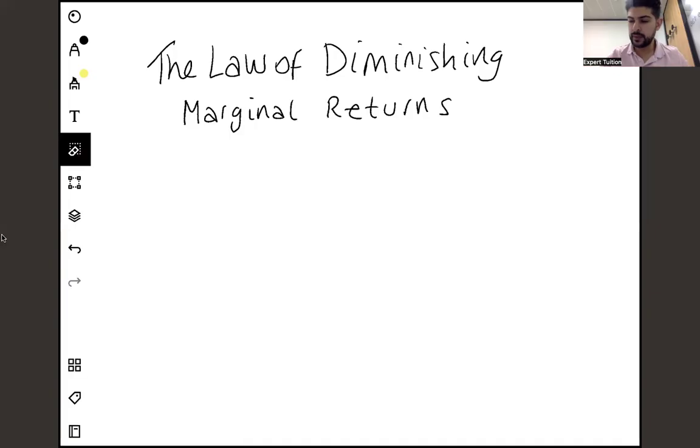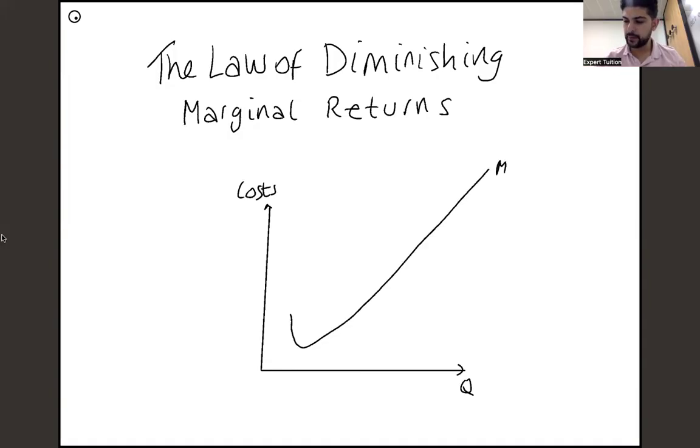Now you should hopefully know that diagrammatically marginal cost looks like a Nike tick, so it kind of takes the following shape. Here's quantity, here's costs, and it looks like that. You can draw that neater than I can, and that's going to be Q1 over here.